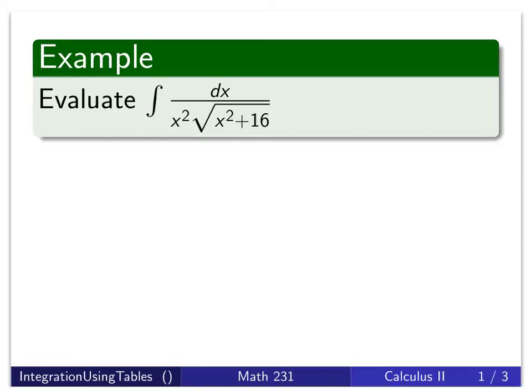the back of your book, the web, for example, has these listed out for us. So the first one we're going to look at is the integral of dx over x squared radical x squared plus 16.